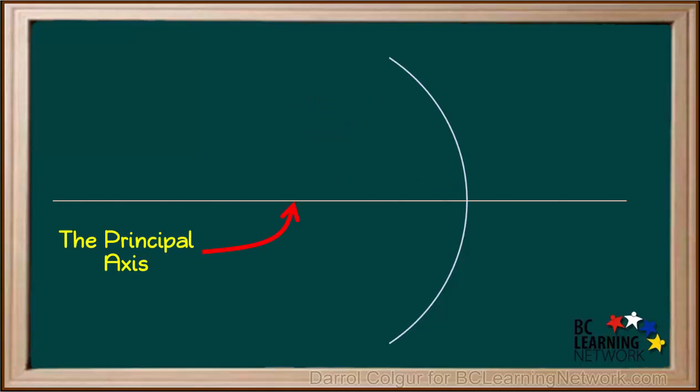Here's the principal axis going through the middle of the mirror. Here's the focal point F for this mirror. The 2F point is twice as far from the mirror surface as the focal point, and it is shown here.